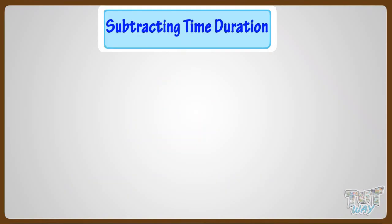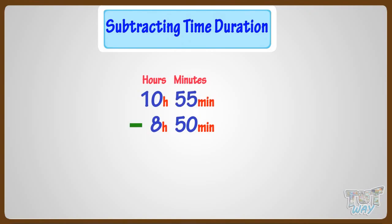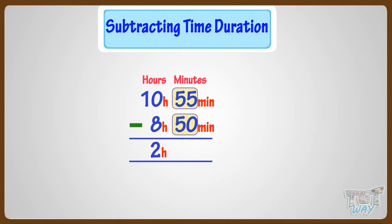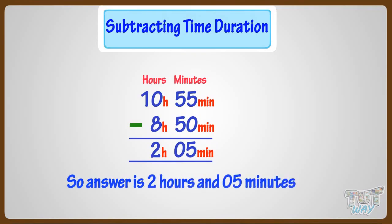Let's take another example. We have to subtract 8 hours and 50 minutes from 10 hours and 55 minutes. Subtracting hours, that is subtracting 8 from 10, we are left with 2 hours. Subtracting minutes, that is subtracting 50 minutes from 55 minutes, we are left with 5 minutes. So the answer is 2 hours 5 minutes.